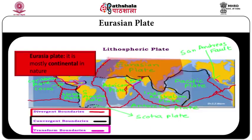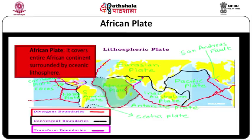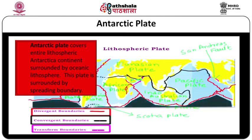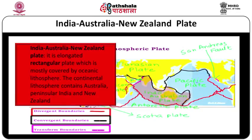The Eurasian plate is mostly continental in nature. The African plate covers the entire African continent, surrounded by oceanic lithosphere. The Antarctic plate is surrounded by spreading or divergent boundaries. The Indo-Australian plate is an elongated rectangular plate mostly covered by oceanic lithosphere, containing Australia, Peninsular India, and New Zealand.